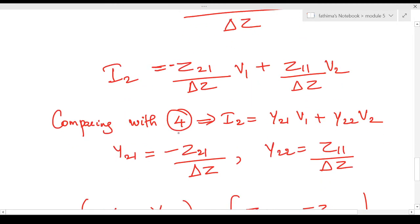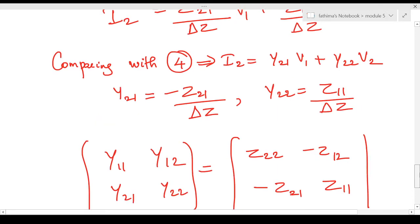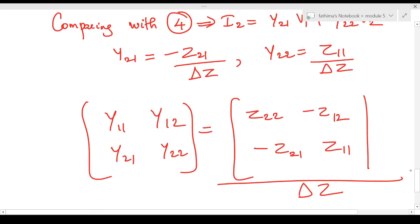So i2 = (−z21/Δz)·v1 + (z11/Δz)·v2. Comparing this with the Y parameter equation i2 = y21·v1 + y22·v2, we get: y21 = −z21 / Δz, and y22 = z11 / Δz. We have now found all four Y parameters in terms of the Z parameters.